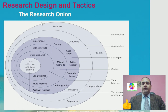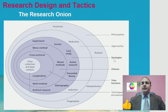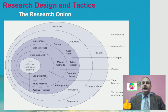یہ diagram میں نے آپ کو پہلے بھی display کی تھی۔ اس میں research philosophies — positivism، realism، interpretivism، pragmatism — پہلے cover کر لی ہیں۔ پھر deductive اور inductive approaches بھی cover کی ہیں۔ آج ہم تین main headings — strategies، choices، اور time horizons — research design کے حوالے سے شروع کریں گے۔ Research strategies میں experiment، survey، case study، action research، grounded theory، ethnography، اور archival research شامل ہیں۔